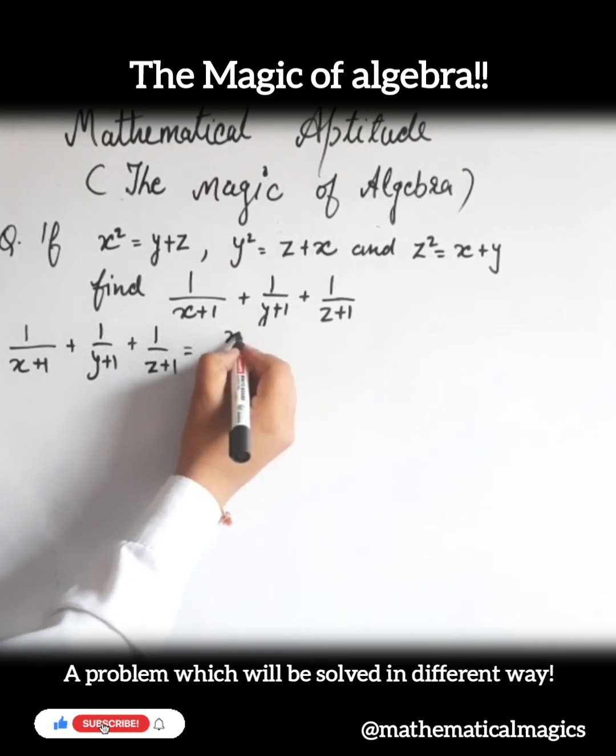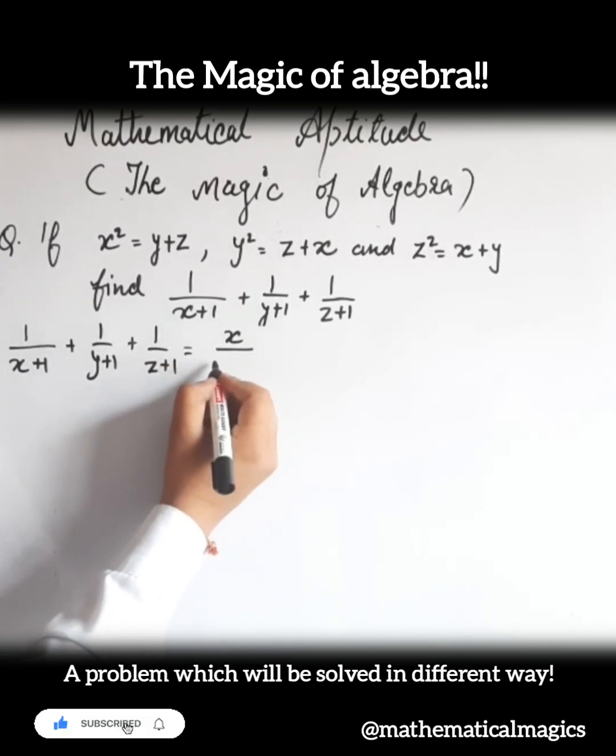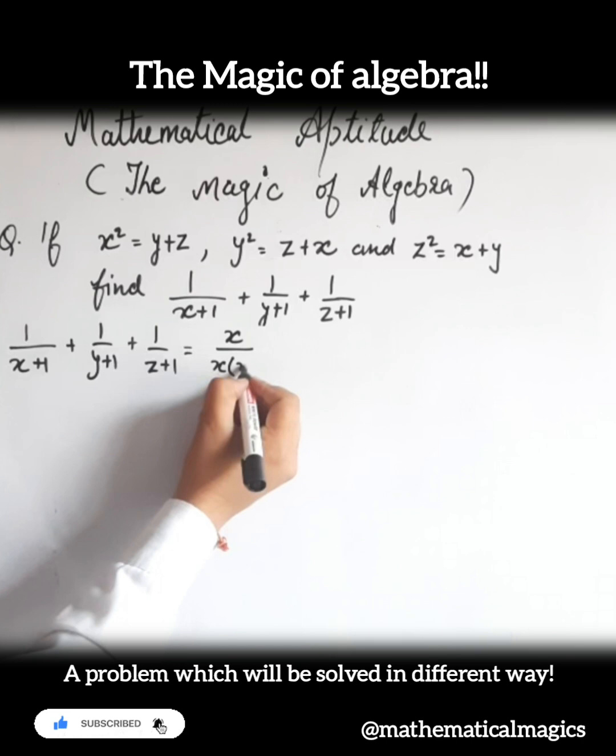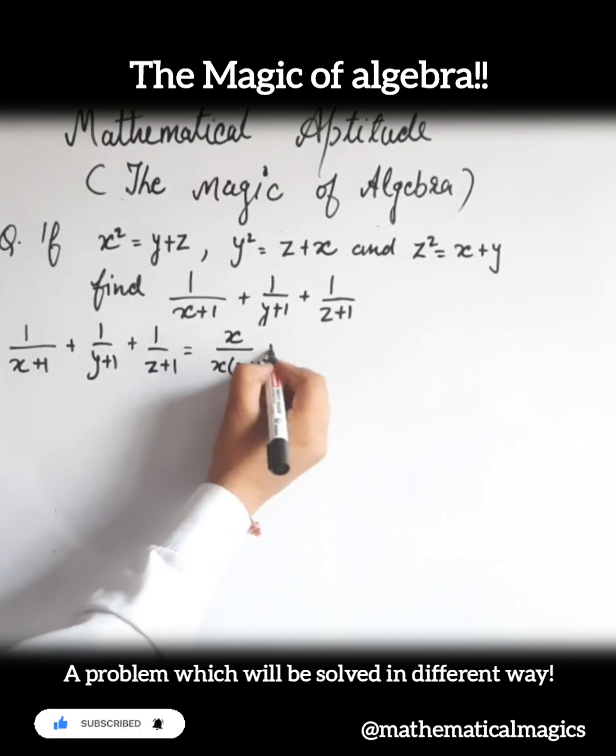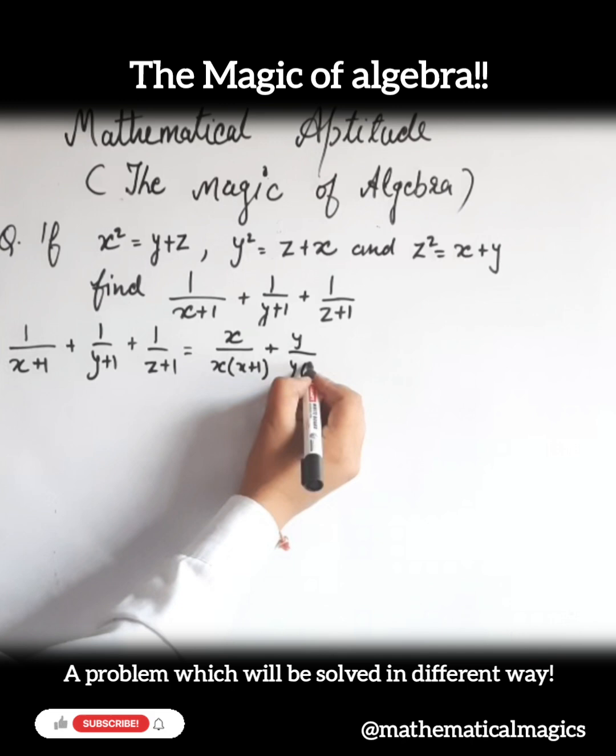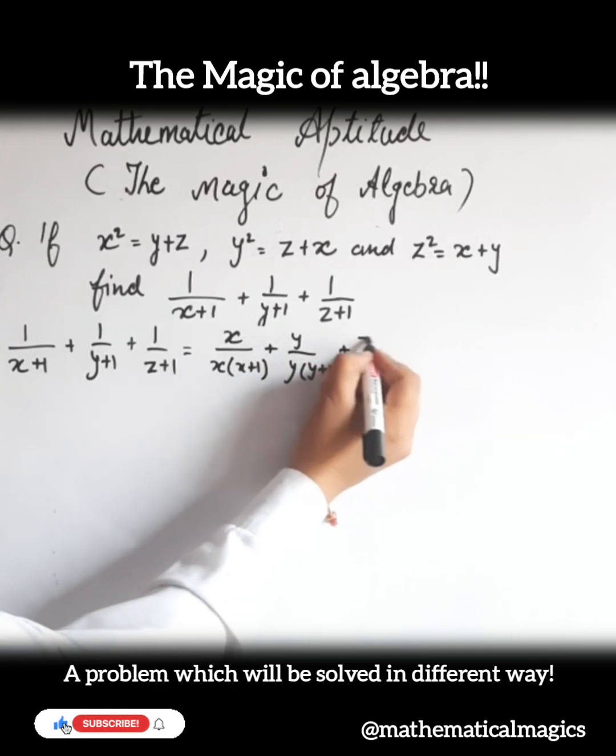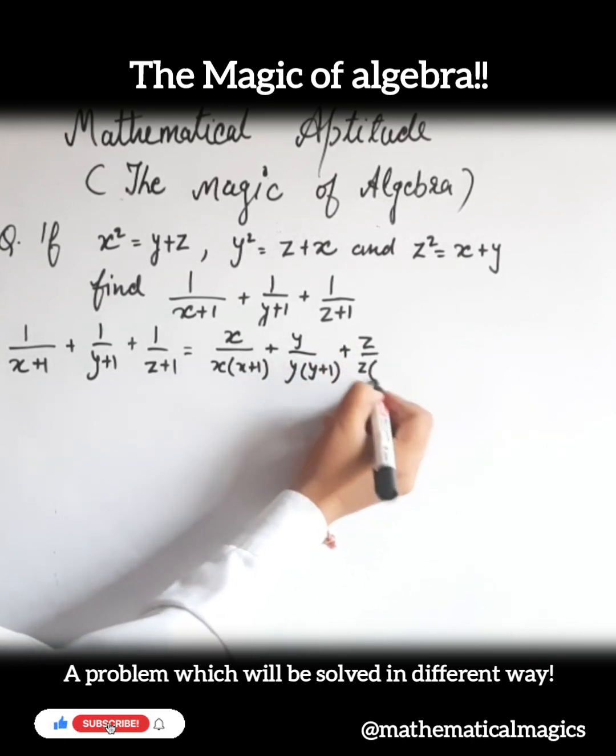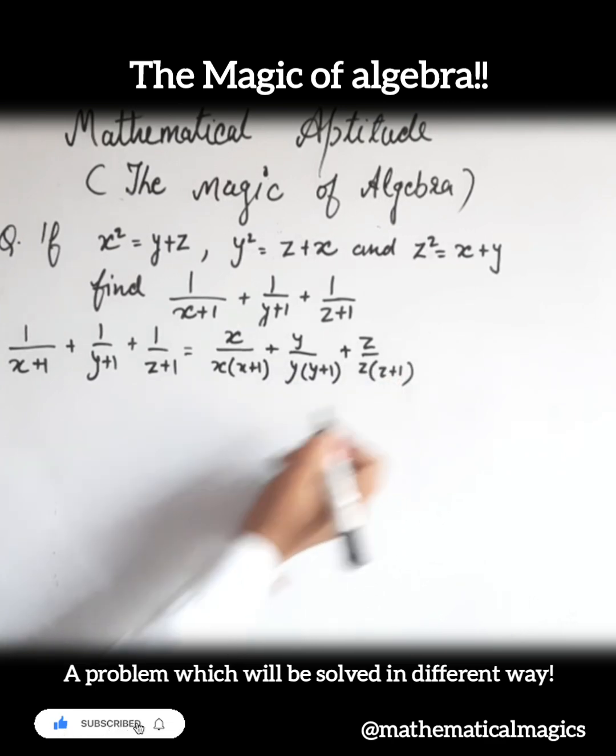What will happen? x upon x into x plus 1 plus y upon y into y plus 1 plus z upon z into z plus 1.